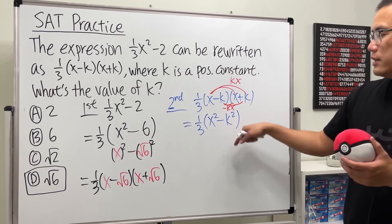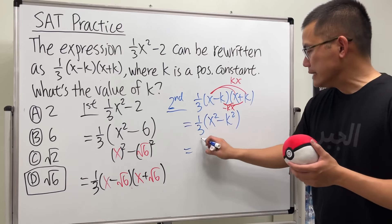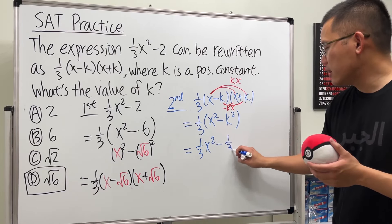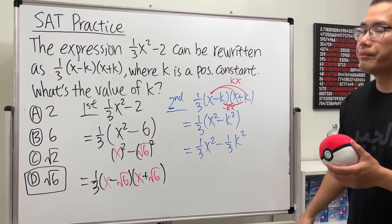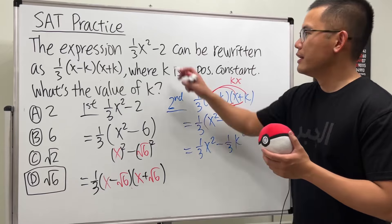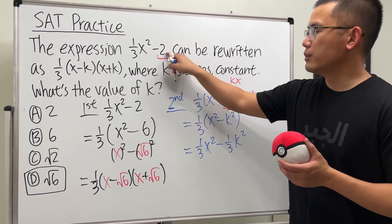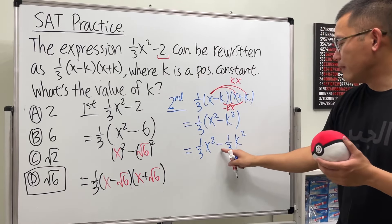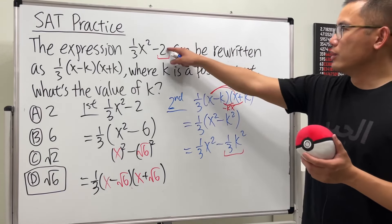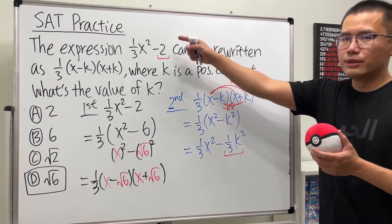And then we will just distribute. This is 1/3 x², and then minus 1/3 k². Now, let's play a game. It's called mix and match. Here, we have minus 2. Here, we have minus 1/3 k². So the 2 has to be that. That has to be 2.